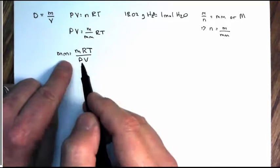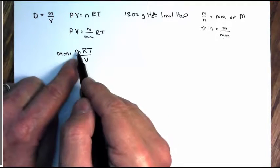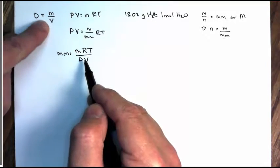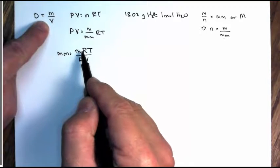Now, if I know the molar mass, well, now I've got mass and volume. Look at that. That's density. All I have to do is rearrange this equation.